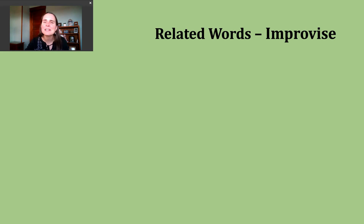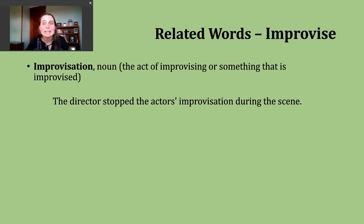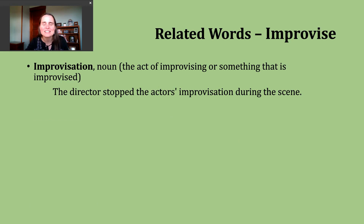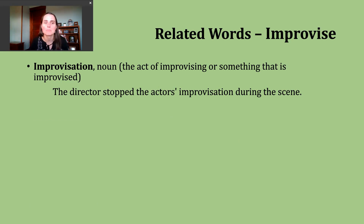Now let's spend a little time looking at some words related to our verb improvise. The first word is the noun improvisation — this is the act of improvising, or it might describe something that has been improvised. An example: the director stopped the actor's improvisation during the scene.